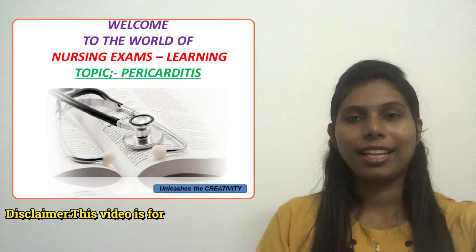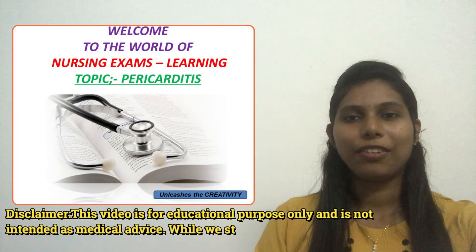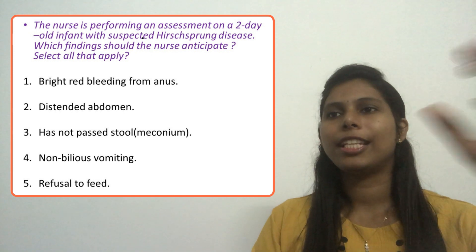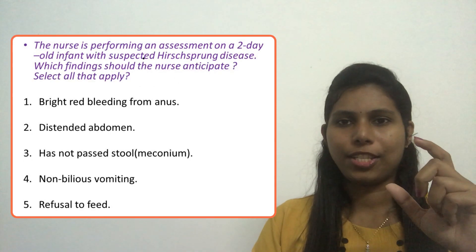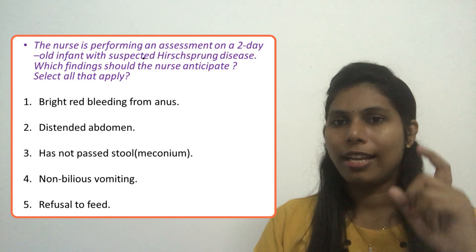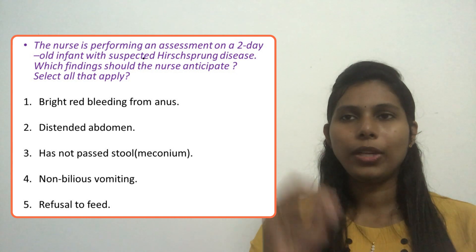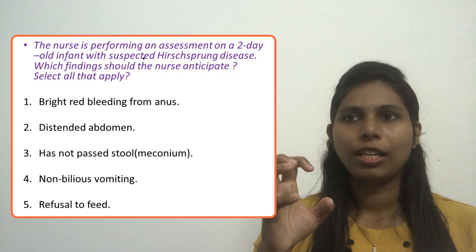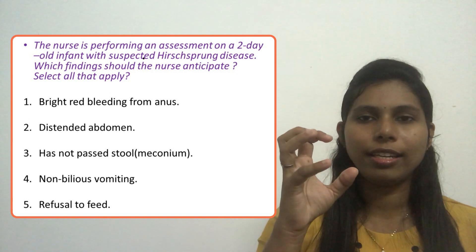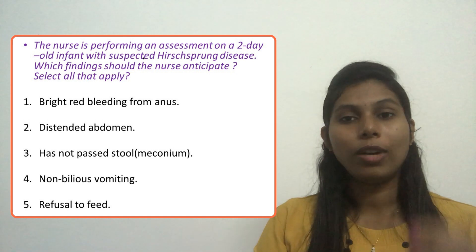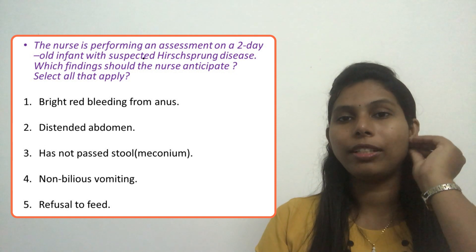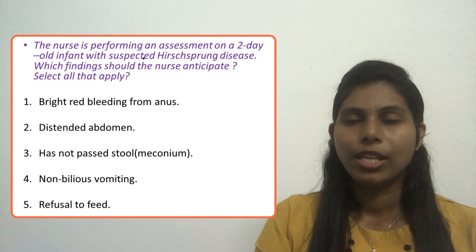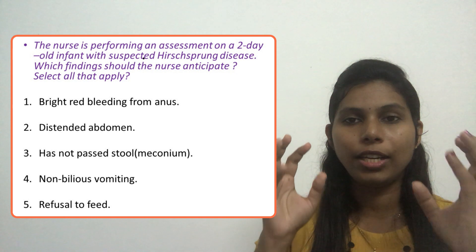Hello everyone, welcome to my channel for nursing exam learning. We'll start with today's question: the nurse is performing an assessment on a two-day-old infant with suspected Hirschsprung's disease. Which findings should the nurse anticipate? Select all that apply. The question asks about the clinical features expected in a two-day-old infant with this condition.